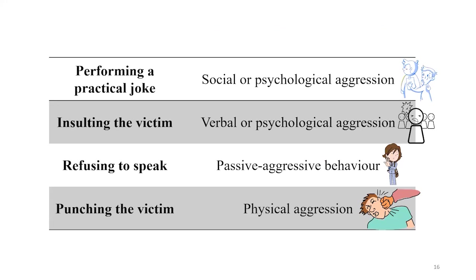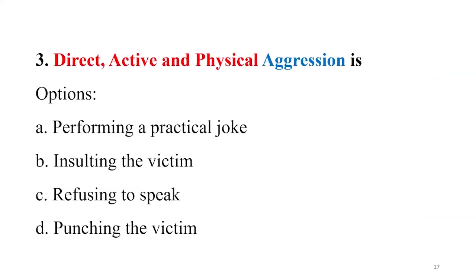Performing a practical joke is social or psychological aggression. Insulting the victim is verbal or psychological aggression. Refusing to speak is passive-aggressive behavior. Punching the victim is directly associated with physical aggression. Coming back to the question asking about direct, active, and physical aggression — the correct answer is option D: punching the victim.